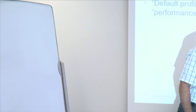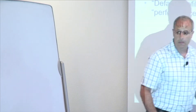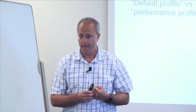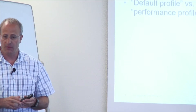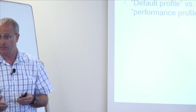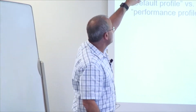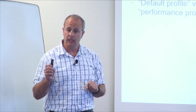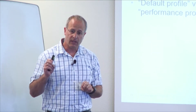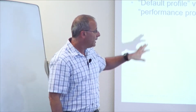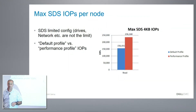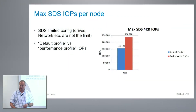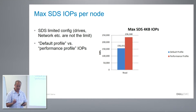When you're running in default — and the profile talks about SDS resources — you have a profile for SDS, SDC, and the MDM. In this case I'm talking about the SDS. We're running default on the SDS. When you're running default on this config, you can get about 150,000 IOPS per SDS, or per node.